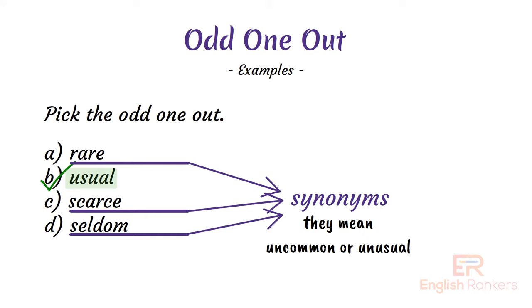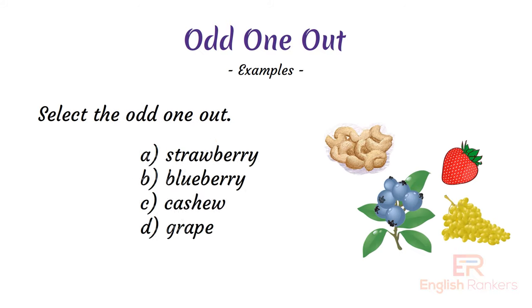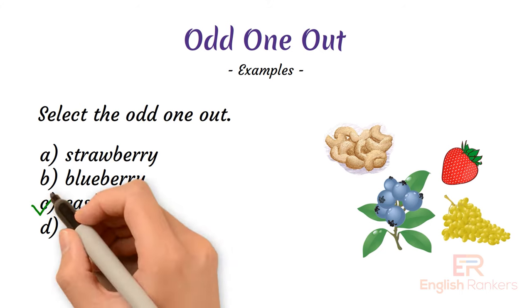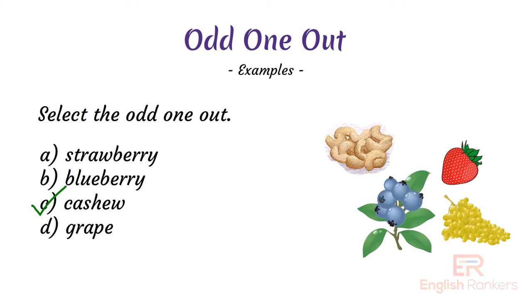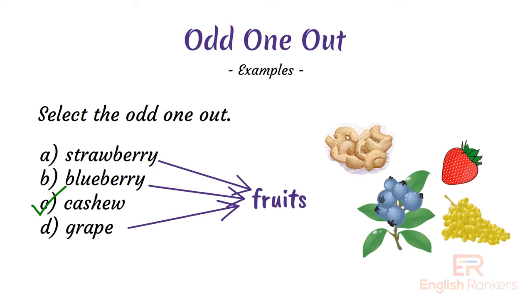Practice some more examples for a better understanding. Select the odd one out: A) strawberry, B) blueberry, C) cashew, D) grape. The correct answer is cashew. Strawberry, blueberry, and grapes are fruits, while cashew is a dry fruit, so cashew is the correct answer.